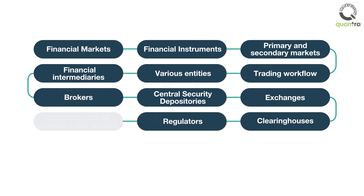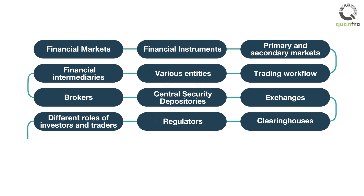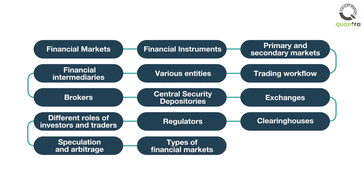You will also learn about the different roles investors and traders perform. These roles will help you understand the different types of market participants operating in financial markets. Towards the end of the course, you will be exposed to concepts like speculation and arbitrage. Lastly, you will learn various types of financial markets, and we will end the course by explaining commonly used jargon in financial markets.